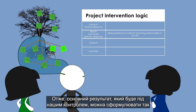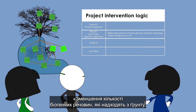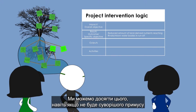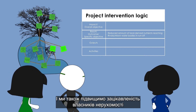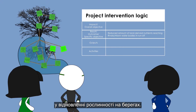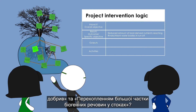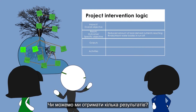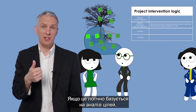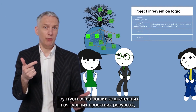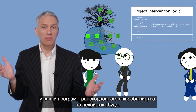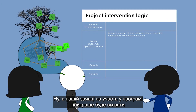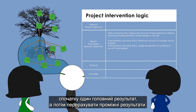So the main result under their control is formulated as: reduced amount of land-derived nutrients reaching the Rivala-Alavia water bodies in runoff. They can achieve this even without stricter enforcement of laws, as they will create an economic incentive for farmers and raise interest among property owners in restoring vegetation on shores. As for having multiple results — reduced excess use of fertilizer and larger proportion of nutrients in runoff intercepted — if it is logically based on the objective analysis, not over-ambitious, and permitted by the program, multiple results are acceptable. In their program's application form, it seems best to list one main result and then intermediary results.